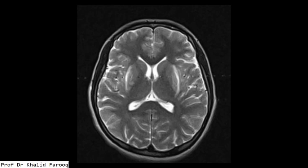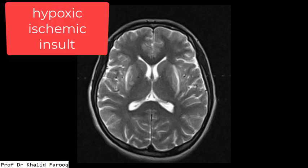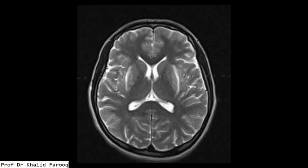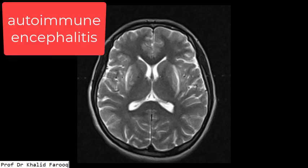To summarize, there are multiple causes for hyperintense signals in the basal ganglia. In the ischemic category we can say hypoxic ischemic insult and venous infarct. In the neurodegenerative category we can place autoimmune encephalitis and Creutzfeldt-Jakob disease.